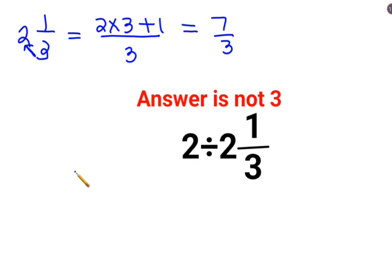So here your question has now changed to 2 divided by 7 upon 3. Now whenever there is a fraction involved in division, you will follow the acronym of KCF.